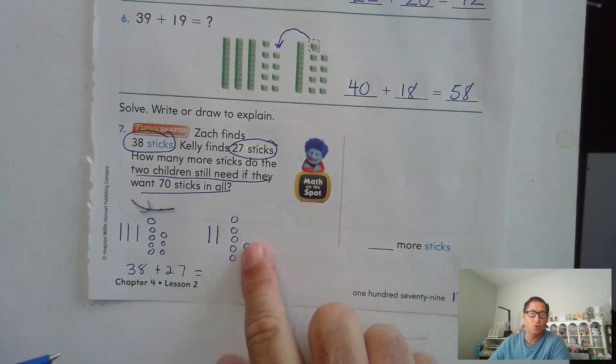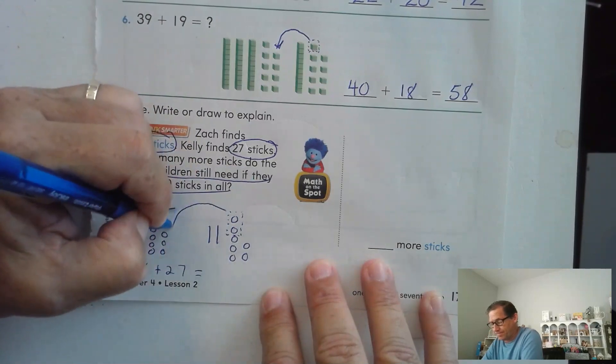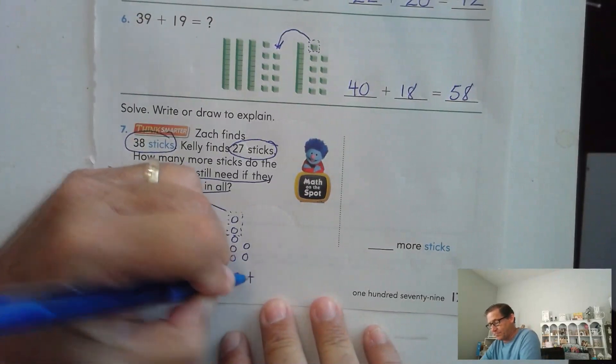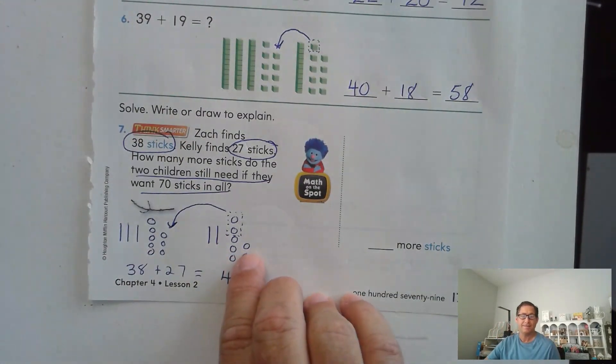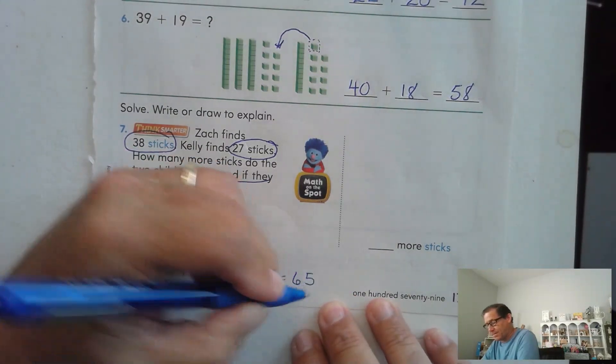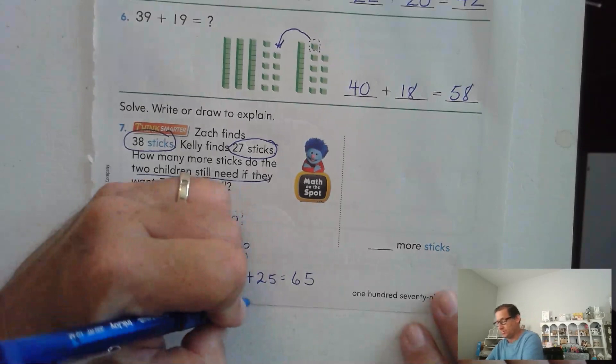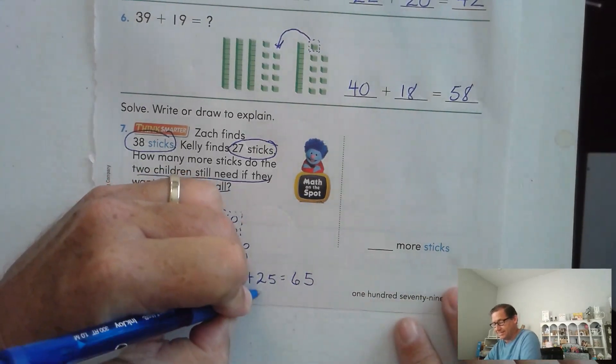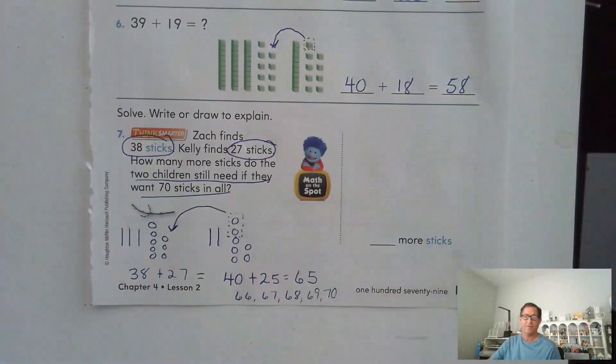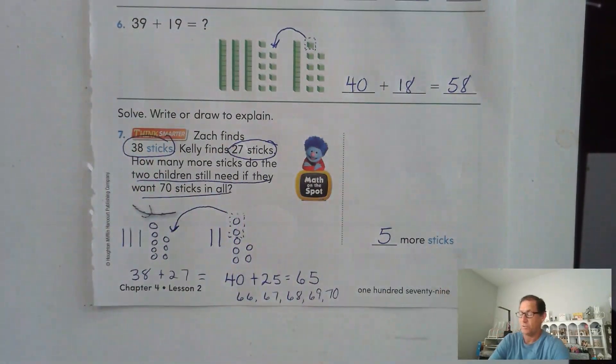So I'm going to go ahead and take two ones from 27, give it to the 38, which gives me now 40 plus 25. 40 plus 25 is 65. We need to get to 70. So 65 is where we're at. 66, 67, 68, 69, 70. How many times did I count forward? 1, 2, 3, 4, 5. So they need five more sticks.